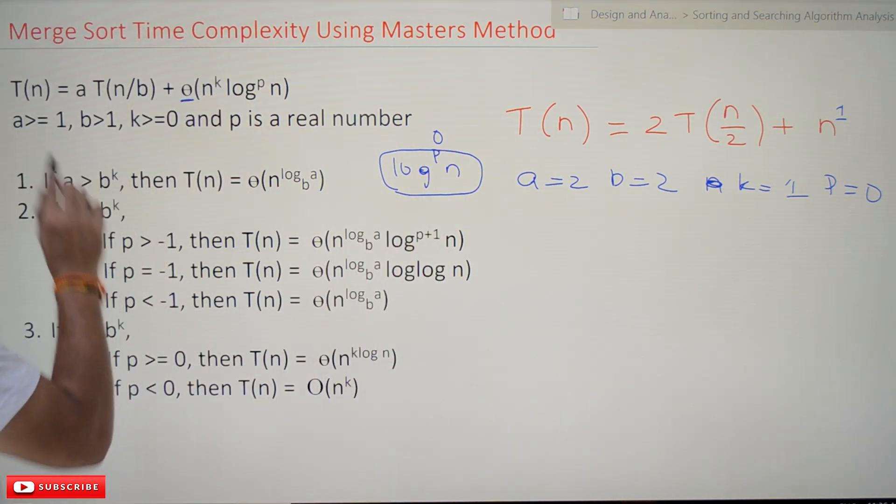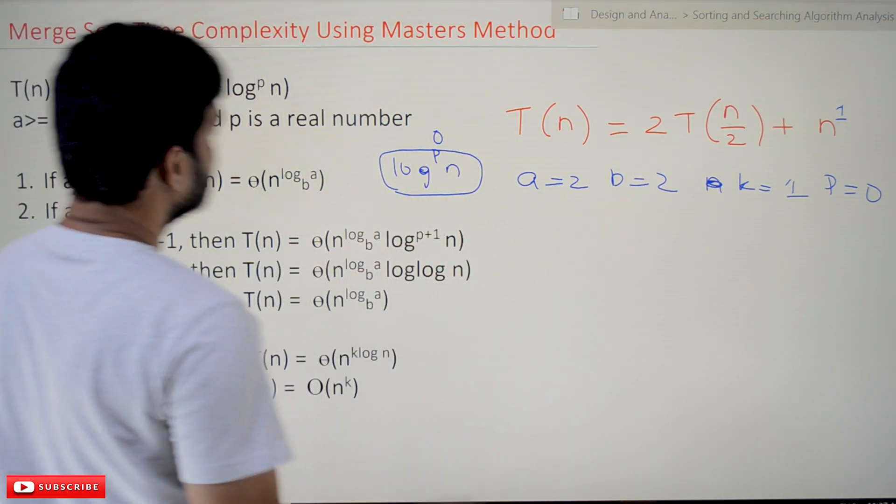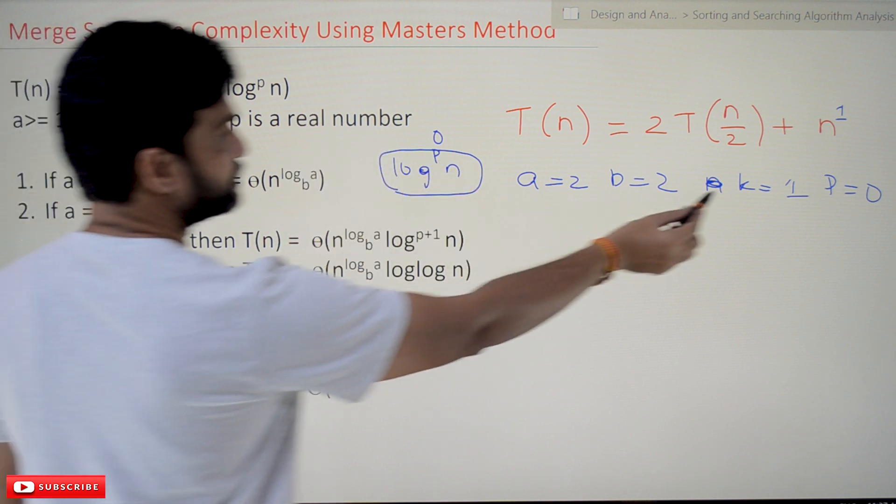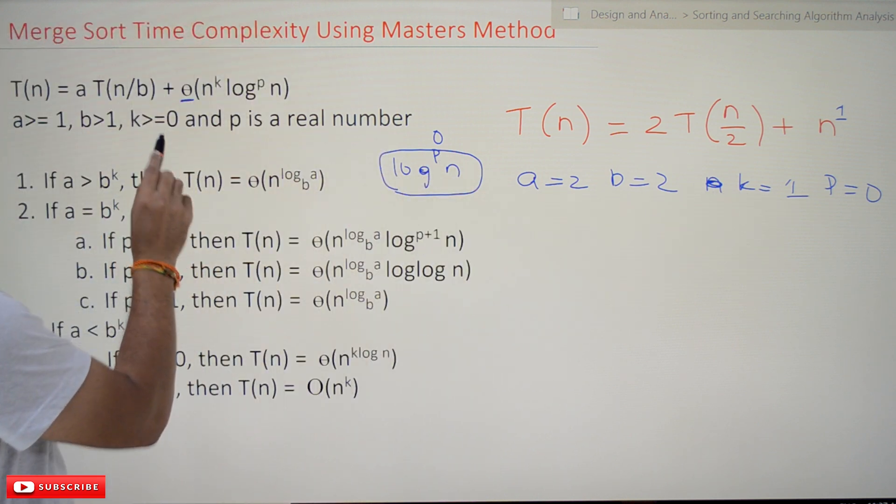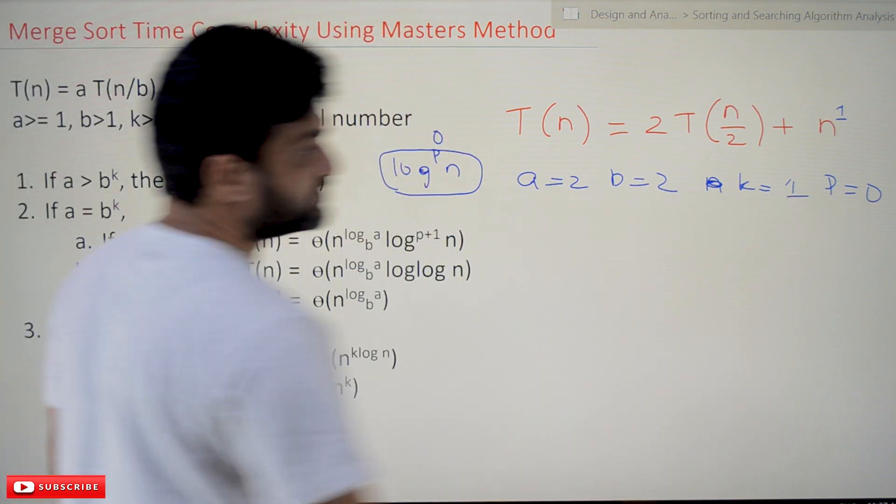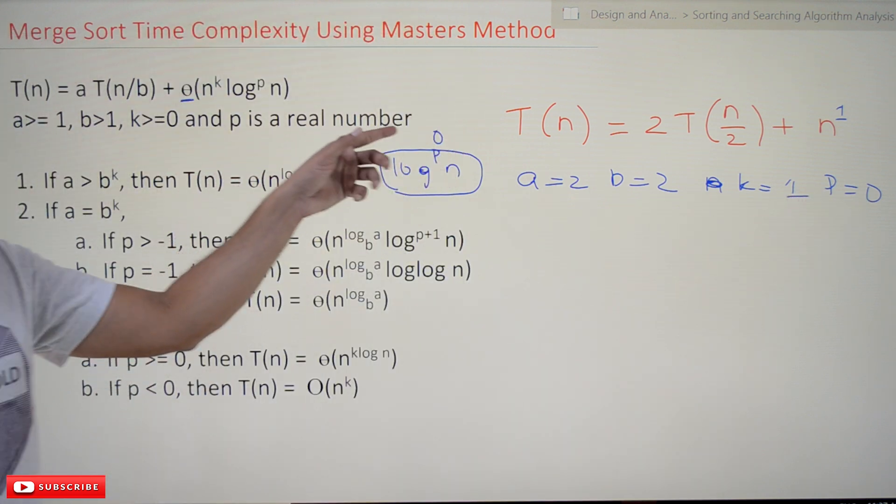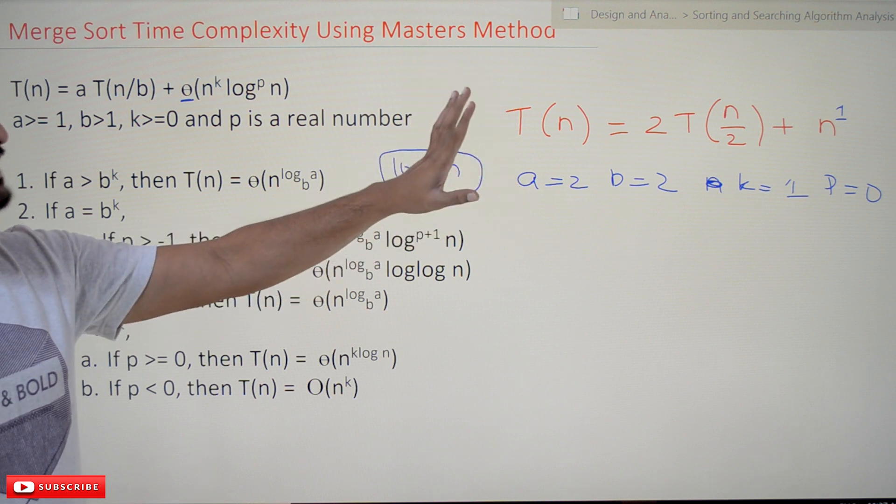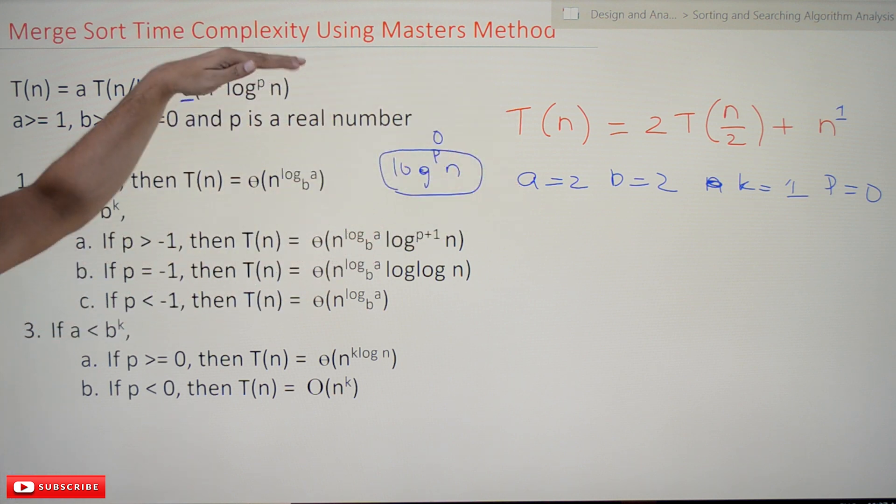Is b greater than 1? Yes, it is true. And k is equal to 1, so k should be greater than or equal to 0—yes, it is true. Next, p is equal to 0. Is p any real number? Zero is a real number, so it is accepted. It is satisfying all these conditions.